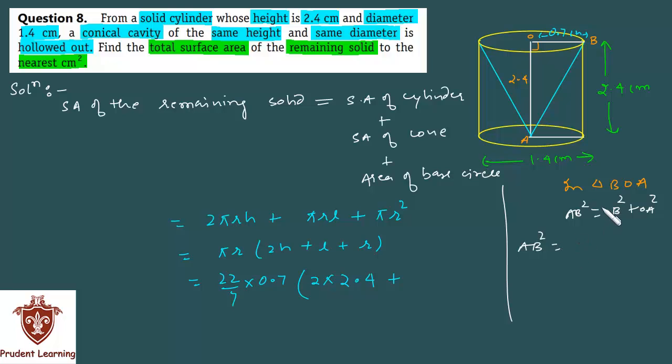AB² = OB² + OA². OB is 0.7 squared plus OA is 2.4 squared, which gives us AB² = 0.7² is 0.49 and 2.4² is 5.76. When you add them, you will get 6.25.